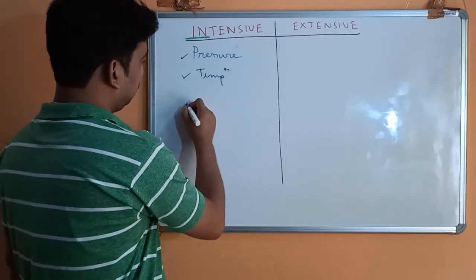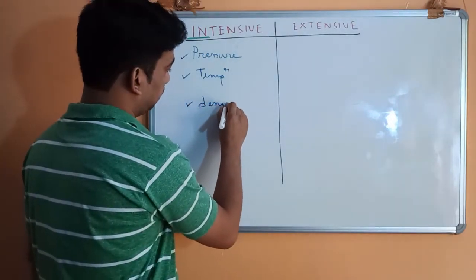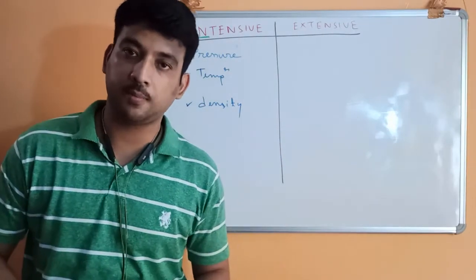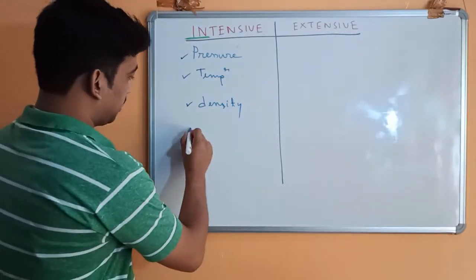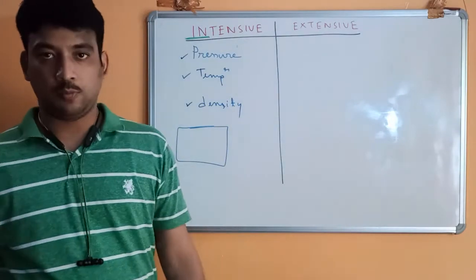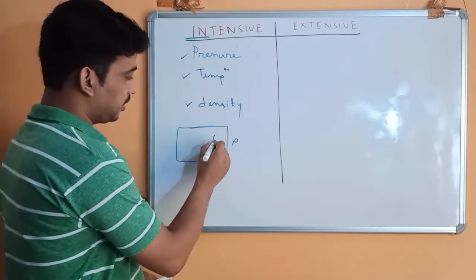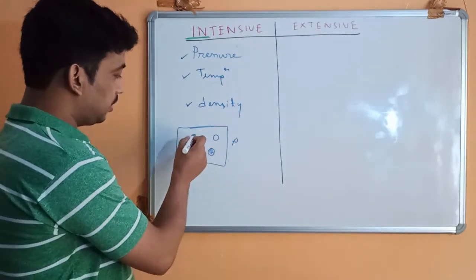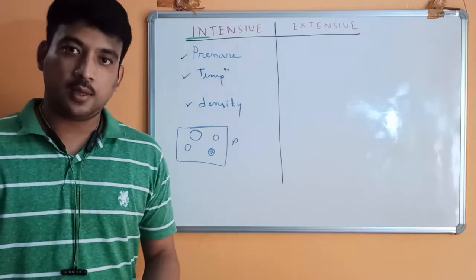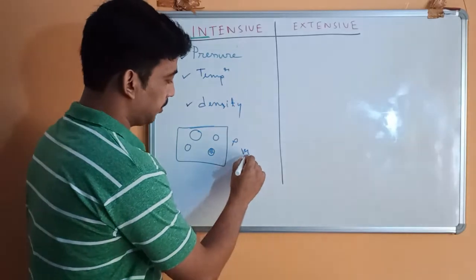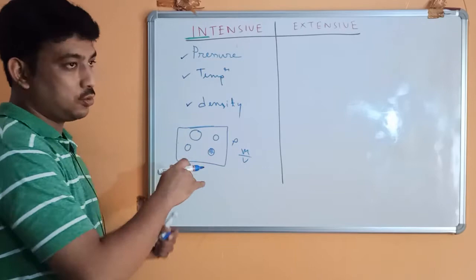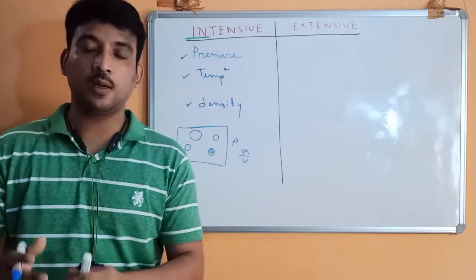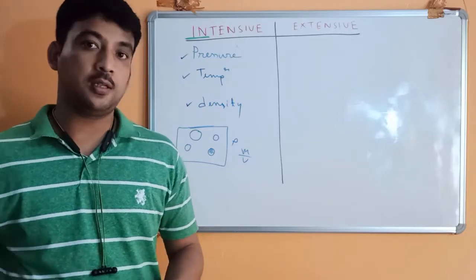Then comes density, which is also an intensive property. This is tricky — many students make the mistake of considering density to be an extensive property. But density is intensive. Consider a body having density rho; if the material is homogeneous, a small portion of that body will have the same density. Density is mass per volume, and if you consider portions of different masses, the density remains the same. So density does not directly depend on mass, making it an intensive property.